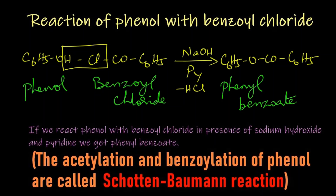To summarize: phenol reacts with benzoyl chloride in presence of sodium hydroxide and pyridine to give phenyl benzoate. This reaction is also called the Schotten-Baumann reaction. The acetylation and benzoylation of phenol are called the Schotten-Baumann reaction. This is one of the named reactions in your syllabus. Thank you.